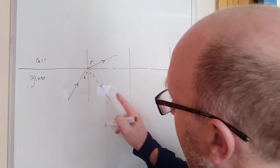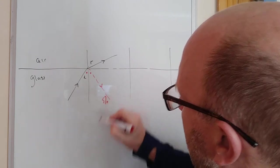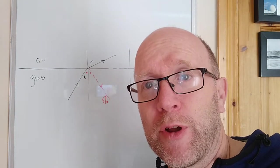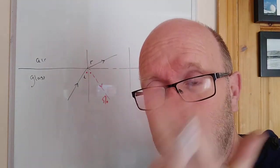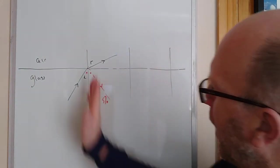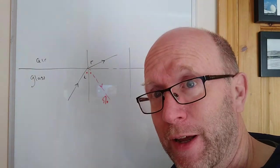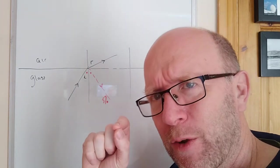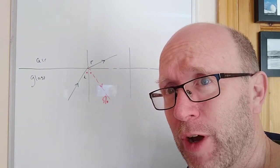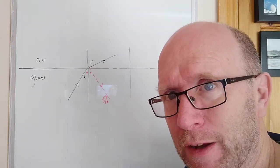That weak reflected ray is about 5% of the light; 95% is refracted. That's why looking out a window you mostly see outside, but also a faint reflected image of yourself. As the angle of incidence increases, the angle of refraction gets bigger until we reach the critical angle — the angle of incidence at which the angle of refraction is exactly 90 degrees.